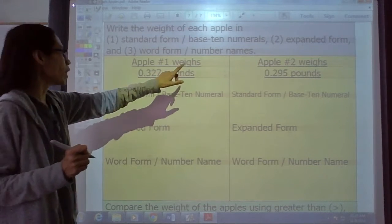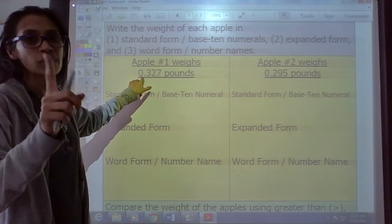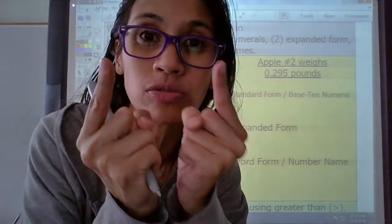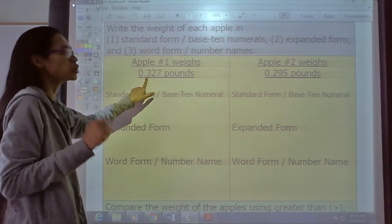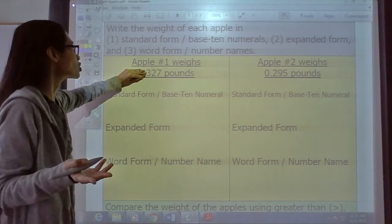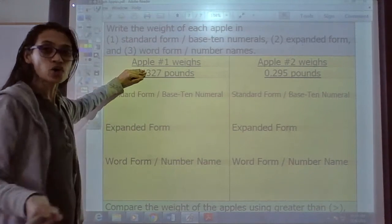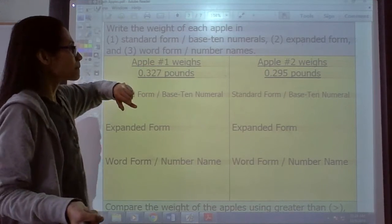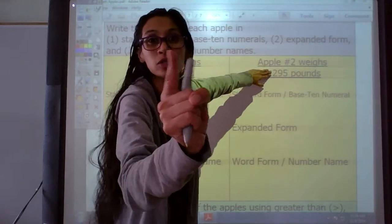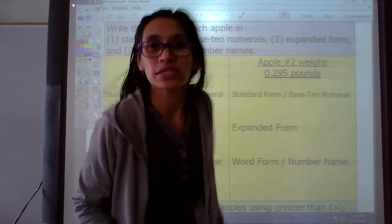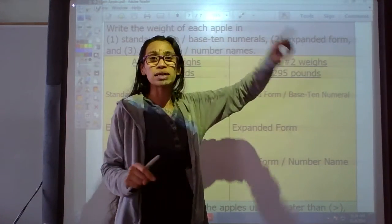Apple number one weighs, let's say that number right. Well, we don't say zero and, and remember, we don't say the P word. You don't say the word point. Don't say that word. We just say 327 thousandths pounds, okay? And apple number two weighs, nope, not the zero, not the P word. Don't say the P word. Don't say point. Don't say it. It is 295 thousandths pounds.